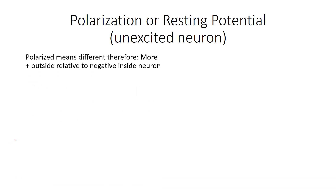Polarization — just like it sounds, if you're polar opposite, that means different. In this case, when we're talking about resting potential, we're talking about establishing more positives outside the neuron relative to it being negative inside. So, more positive outside — that's what polarization is. We're trying to build up the amount of positive charges on the outside relative to inside.